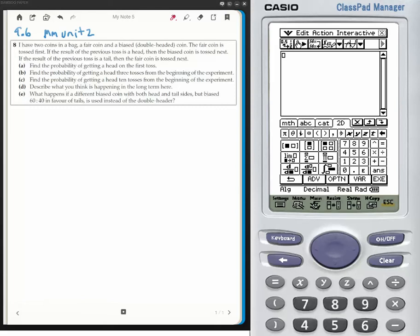The fair coin is tossed first. If the result of the previous toss is a head, then a biased coin is tossed next. If the result of the previous coin is a tail, then a fair coin is tossed.